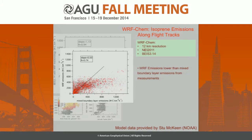As seen earlier, the emissions from the mixed boundary layer method are higher than what we estimated from BEIS. The mixed boundary layer method emissions versus what WRF-CAM thinks the emissions are shows they are again a factor of two apart — very consistent.